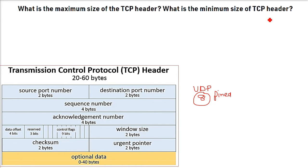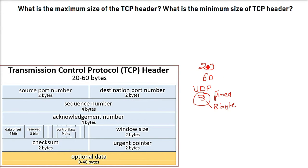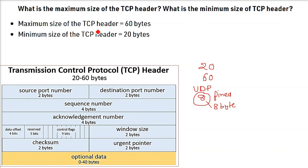For TCP, the minimum is 20 bytes and the maximum is 60 bytes. So the minimum size of the TCP header is 20, while UDP has a fixed 8-byte header. So: 20 bytes minimum, 60 bytes maximum for TCP.